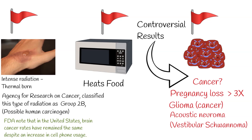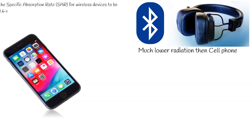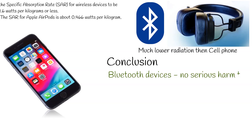This consistency suggests that cell phone usage may not increase the risk of brain cancer. In general, the amount of radiation Bluetooth headphones emit is significantly less than what's generated from a typical cell phone. In fact, Bluetooth devices have a power density 10 to 400 times lower than those of mobile phones. The Federal Communications Commission (FCC) currently requires the specific absorption rate (SAR) for wireless devices to be 1.6 watts per kilogram or less. The SAR for Apple AirPods is about 0.466 watts per kilogram. Bluetooth has relatively low SAR levels, further proving that it is not dangerous to humans.